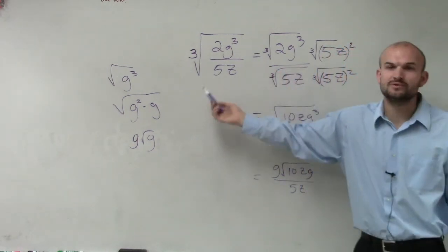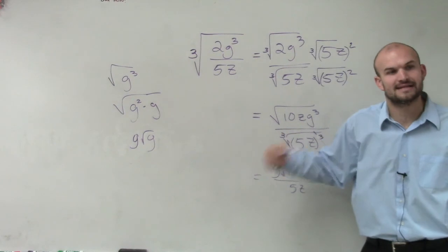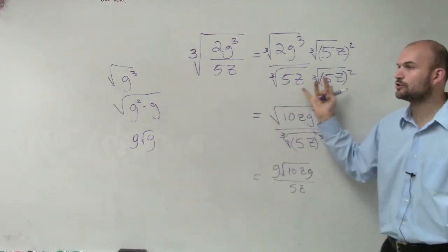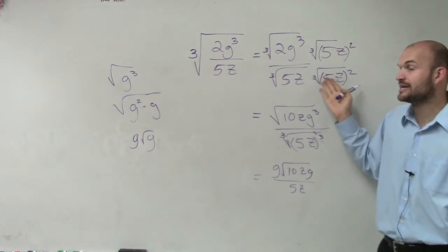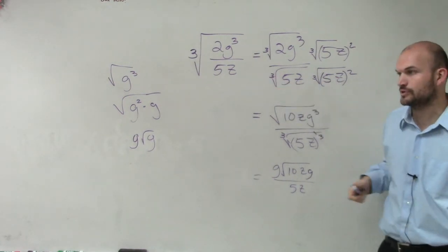So remember, whatever your root is, when you have to rationalize the denominator, you've got to make sure that you're multiplying to rationalize the denominator to get an exponent inside your radical that's going to be equal to your root. Does that make sense?